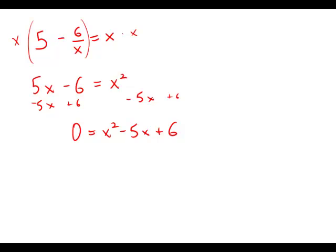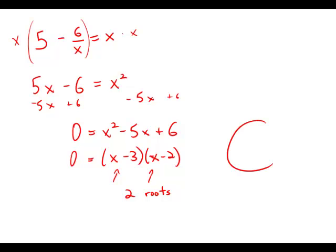It turns out this can be factored very easily to (x minus 3) and (x minus 2). Right there, what we see are two roots — that is to say, two possible values for x, as you usually get with a quadratic. And this is answer choice C.